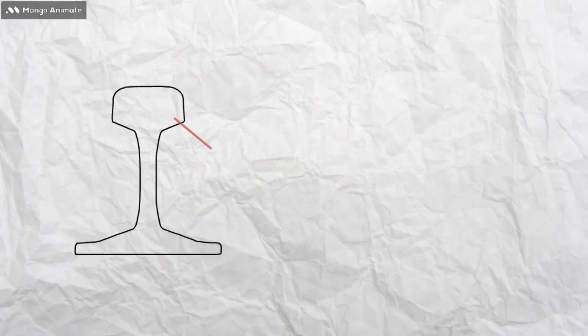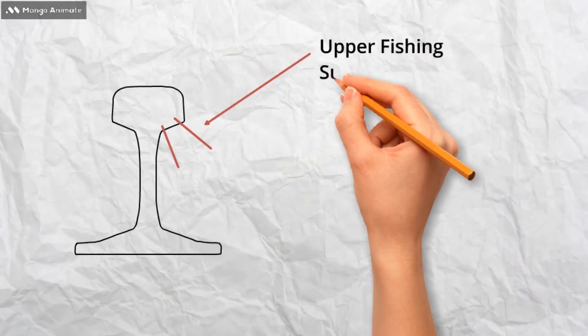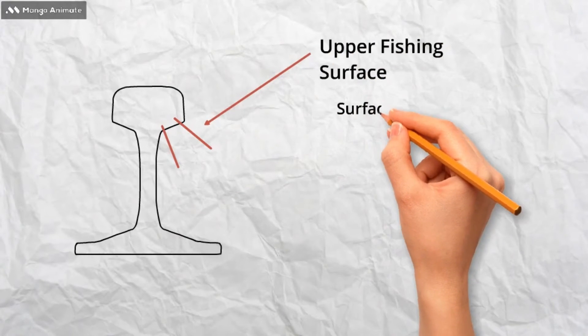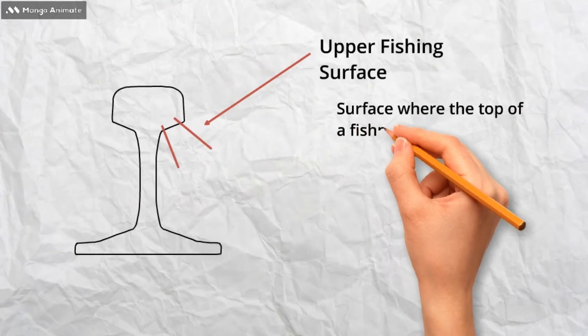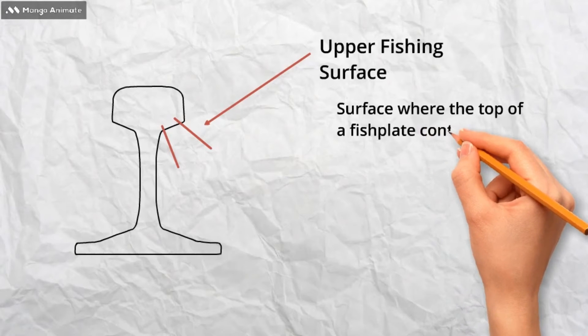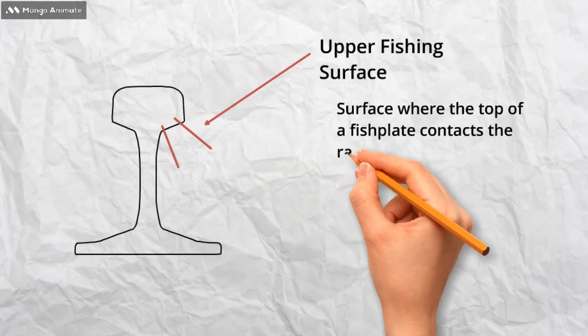Lastly on the head of the rail is the upper fishing surface. It is often thought that the fish plates used to connect rails together in jointed track contact to the web of the rail. However, the fish plates are designed so that only the surface at the top and bottom of the plate contact the rail.